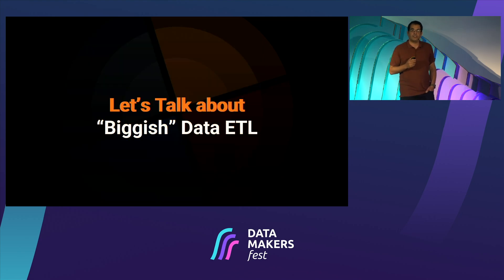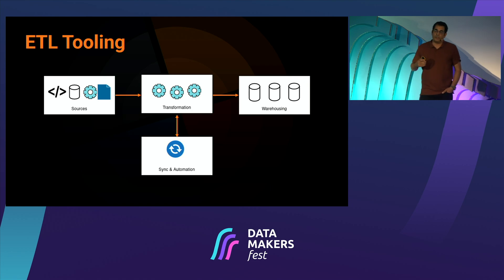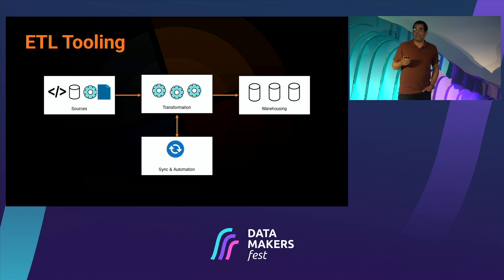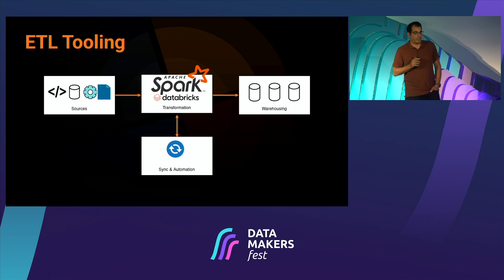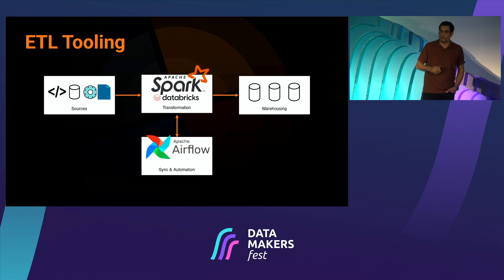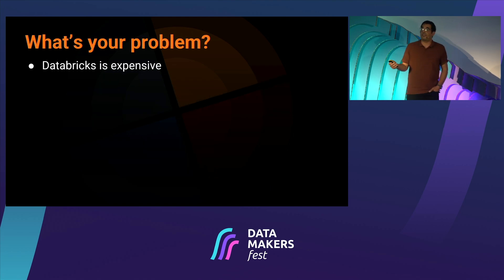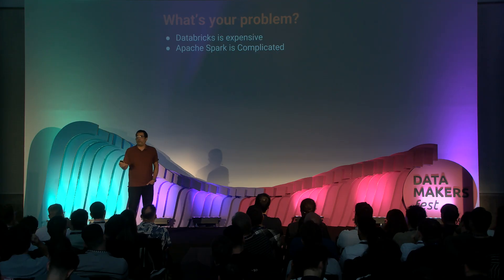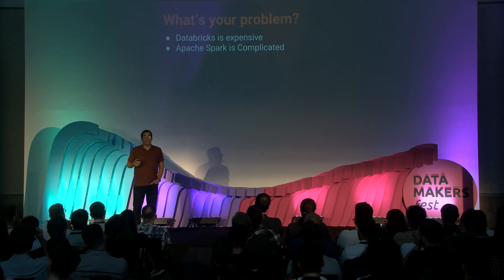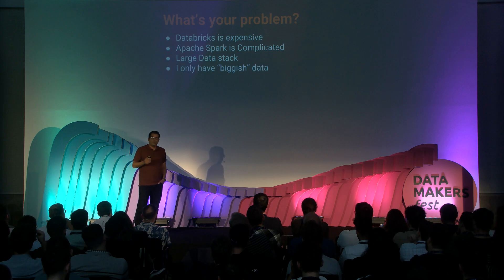Let's talk about a biggish data ETL. A classic ETL has sources, a transformation tool, and a destination — a warehouse or data lake — plus some synchronization and automation tool. The basic setup might be Apache Spark on Databricks, with Apache Airflow. What's the problem with this? Databricks is expensive. Running Spark is expensive. Apache Spark is complicated. Maintaining difficult ETLs is even more complicated and time-consuming. You have a very large data stack, but you only have biggish data.